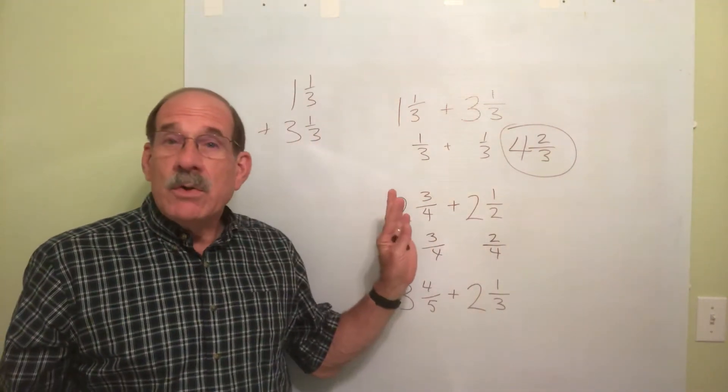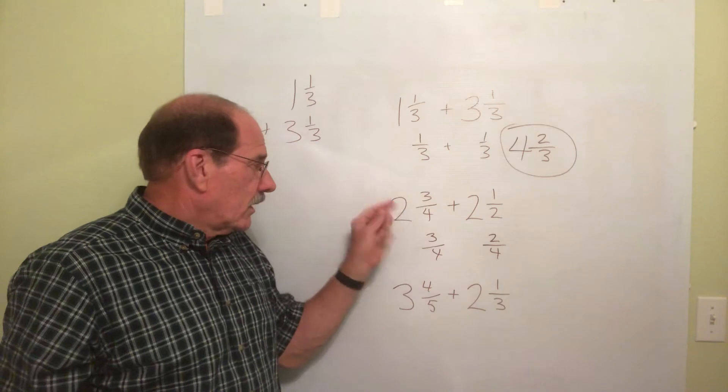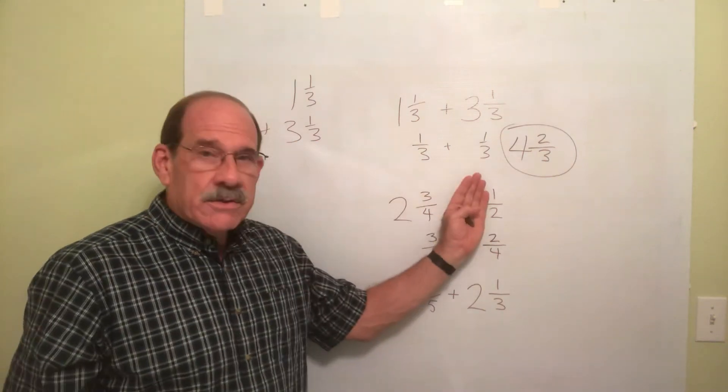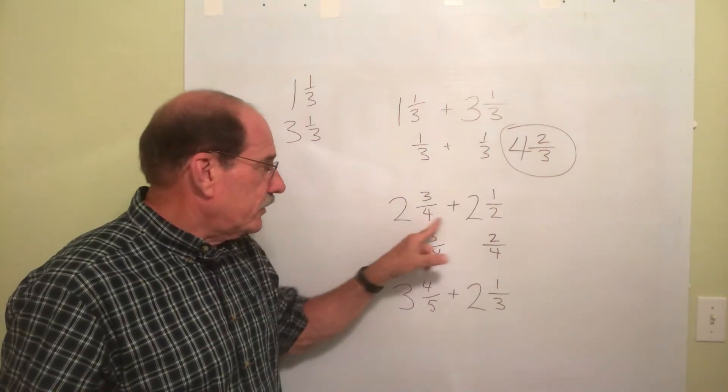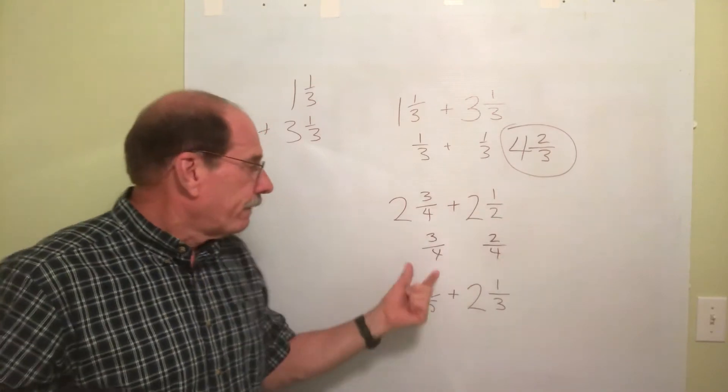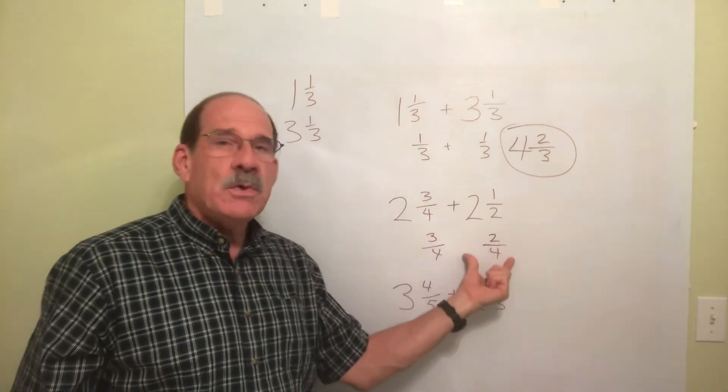So these, we're ignoring the whole numbers. Ignore the 2 there. Ignore that 2. All we're doing is 3 fourths plus 1 half first. Well, that becomes 3 fourths plus 2 fourths.